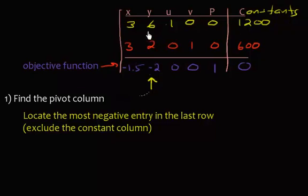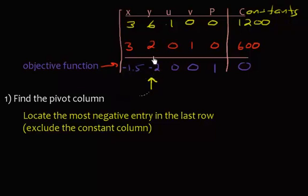Once I find the pivot column, I need to find the pivot row. A quick note: the pivot element will never be in the last row, so my pivot element is going to be the six or the two. Also, if two entries are both the largest negative number — say both are negative twos — you just pick whichever column you want as your pivot column.